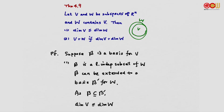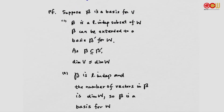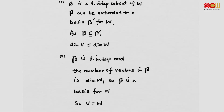For part two: if V and W have the same dimension, we start with a basis beta for V. Beta is linearly independent and has the same number of vectors as the dimension of W, so beta is also a basis for W. Therefore V and W must be the same set.